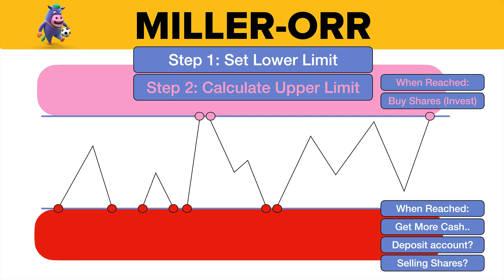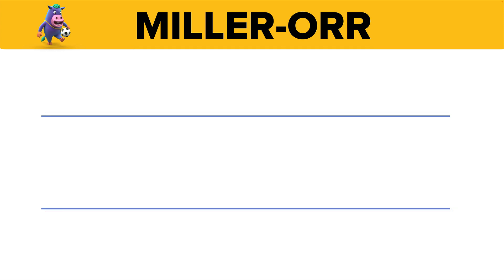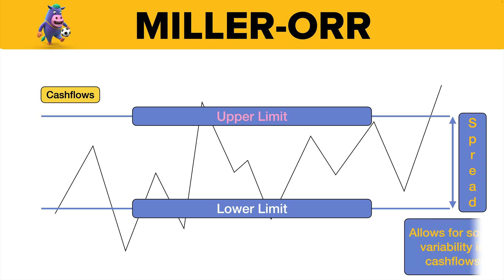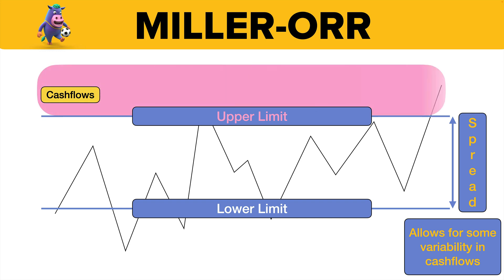Only when we reach the limits do we have to do something. So we've got our cash flows and our cash balances — the lower limit and the upper limit. The difference between the two is something we call the spread. The spread just allows the cash flow balances to go in between the upper and the lower limit, allowing for that variability in cash flows.